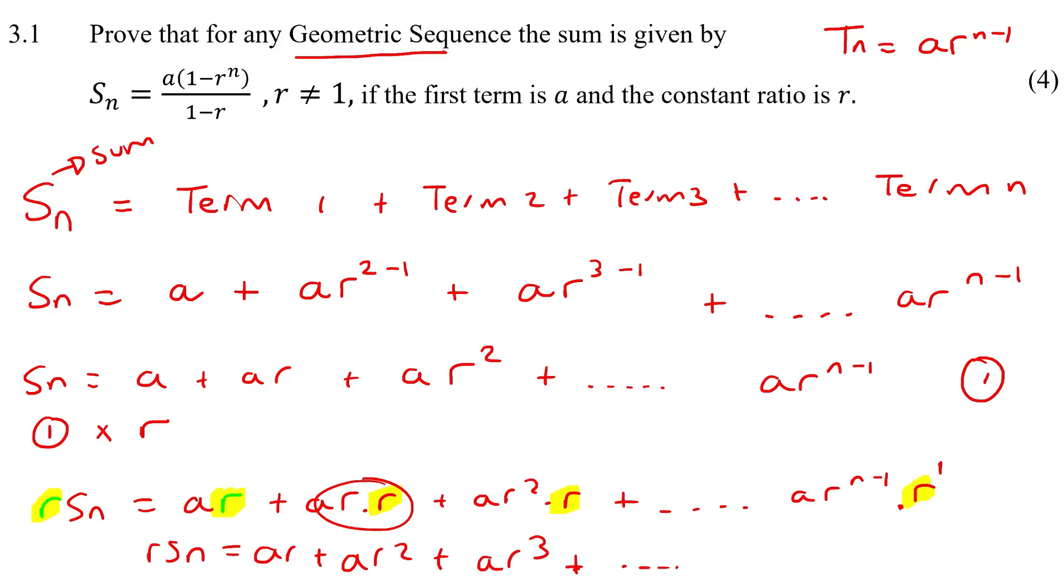Well if this is one and these two bases are the same then the rule says we must add the exponents. So you're going to say n minus one plus one which is actually just going to cause the ones to cancel and so you're just going to be left with n. So you're going to be left with ar to the power of n.